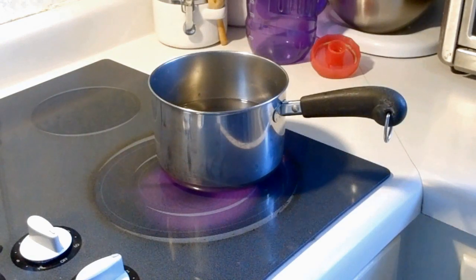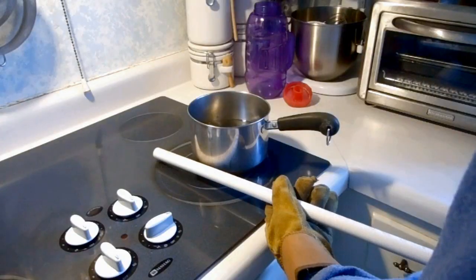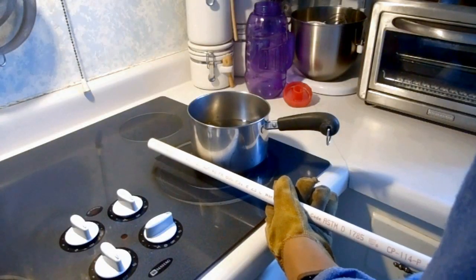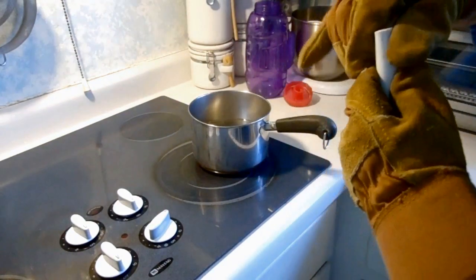Once it's warm, you take the piece of pipe and you hold it above it without touching it and you slowly rotate it. What I'm doing is I'm going to make the scroll first. That's how I always start. And then once it's soft, you just take it and bend the scroll.